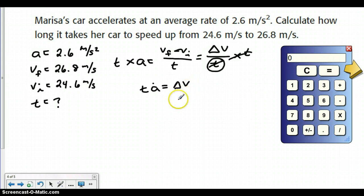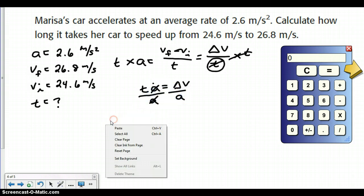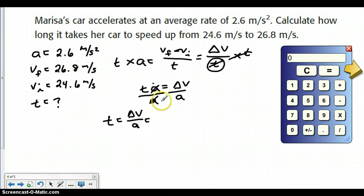So we know what delta V equals. Delta V equals A divided by T, and we are looking for T in this case. So we are then going to divide both sides by A. And we're going to get T equals delta V over A. And in this case, delta V is VF minus VI. So we could plug those back in.